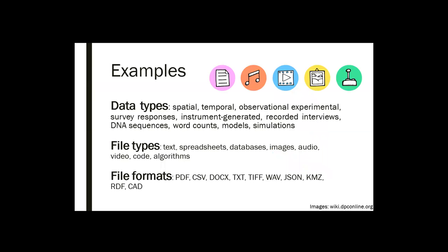Some more specific examples: spatial data, temporal data, recorded interviews, models, word counts. Eric at the last faculty meeting gave a really interesting lib bite about data produced for faculty member Mark Lowersdorf on campus — a massive word count of newspaper issues, a couple billion words. That's research data that should be preserved. Research data can come in all sorts of file types: spreadsheets, databases, audio, video, code, and all sorts of file formats. We'll go into file formats and how they can be problematic a little bit later.